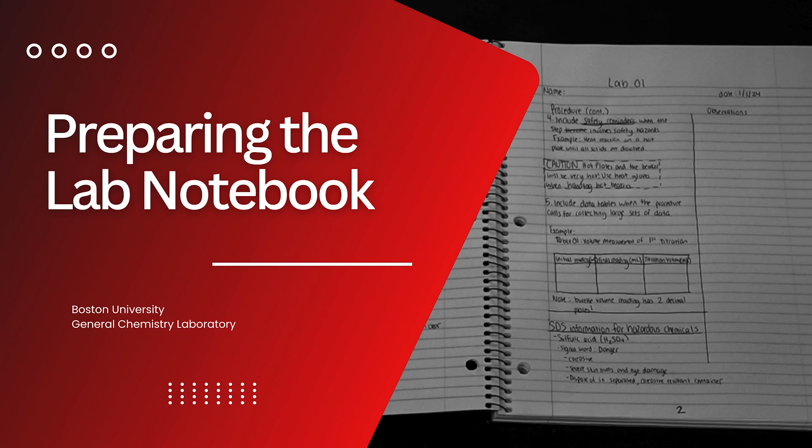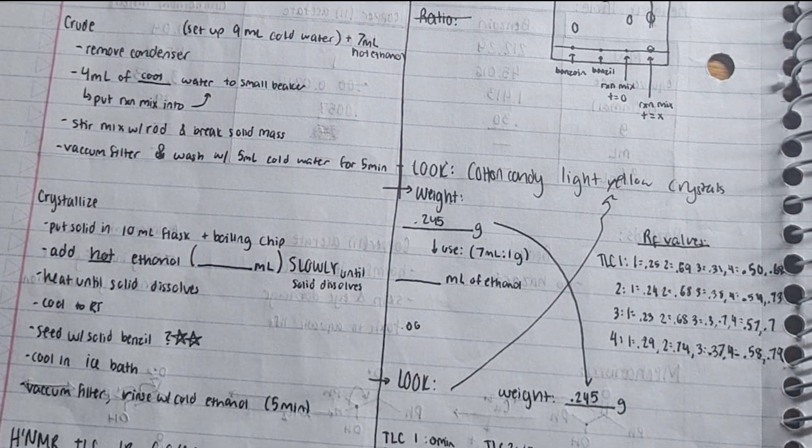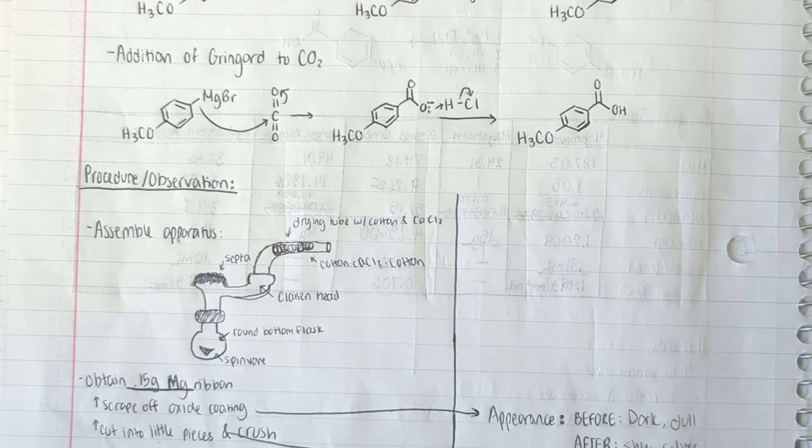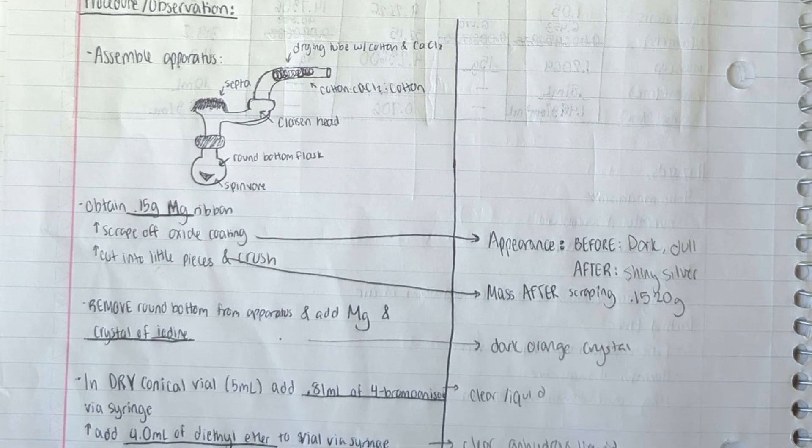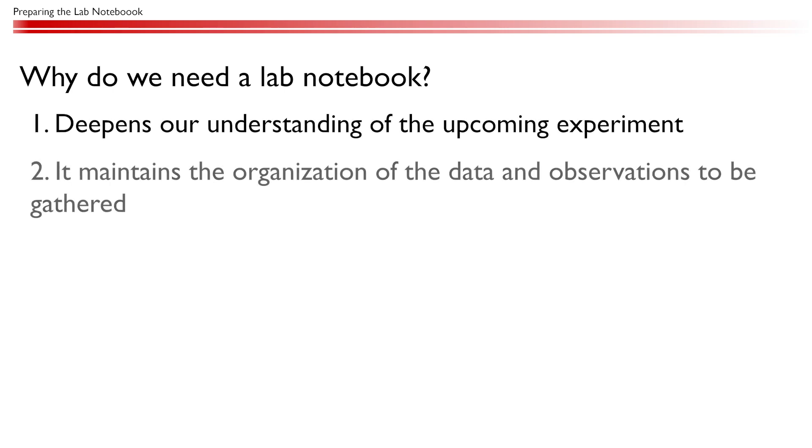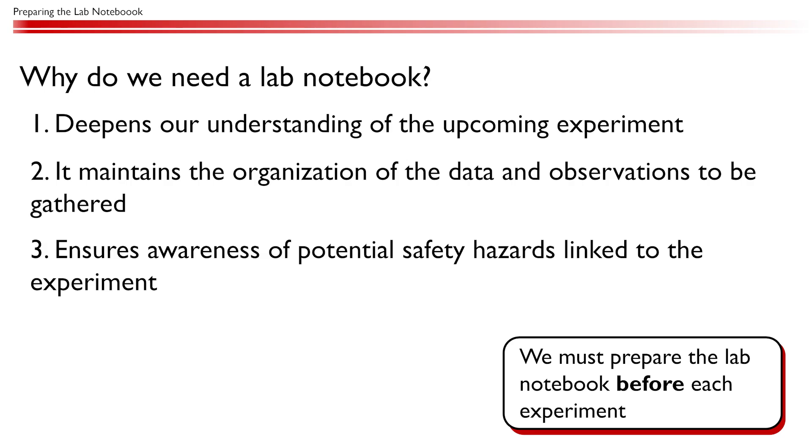In this video, we will discuss how to prepare our lab notebook before each experiment. Keeping a written record of experiments and observations is essential for scientific research, and using a lab notebook is one of the best ways to track that information. The process of preparing a lab notebook has a threefold purpose: first, it deepens our understanding of the upcoming experiment; second, it maintains the organization of the data and observations to be gathered; and last, it ensures awareness of potential safety hazards linked to the experiment.